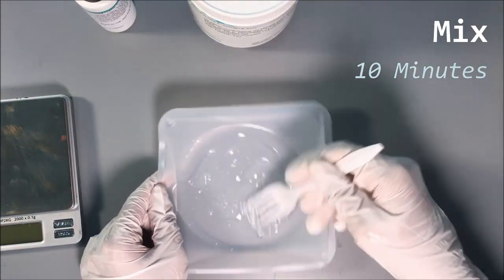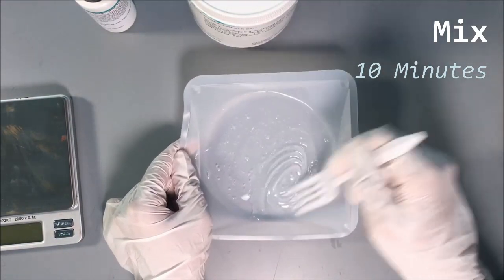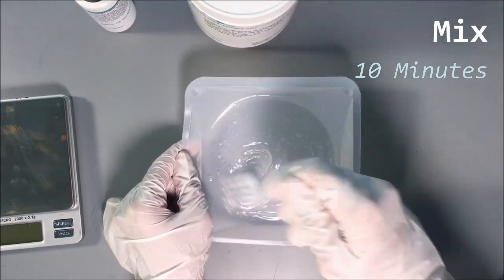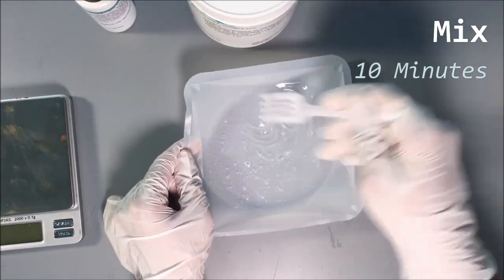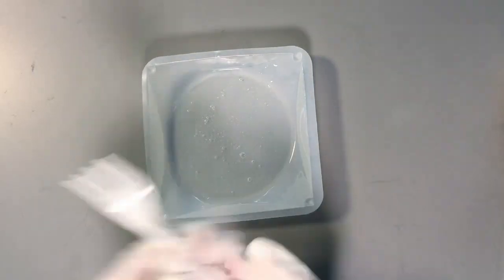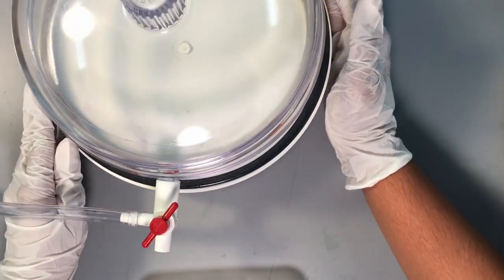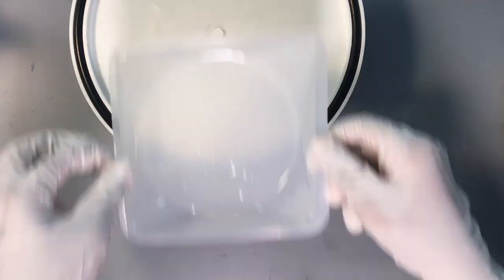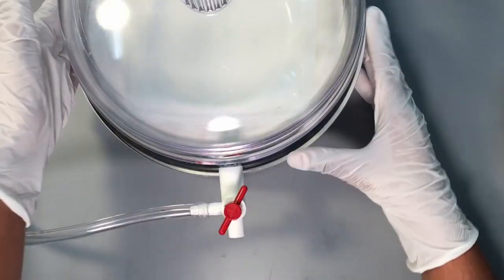Mix your base and curing agent together for 10 minutes. After 10 minutes of thorough mixing, dispose of your mixing apparatus and burst the largest bubbles you see using a pipette tip. To burst the remaining bubbles, place your weighing tray inside the desiccator and desiccate for at least 5 minutes.